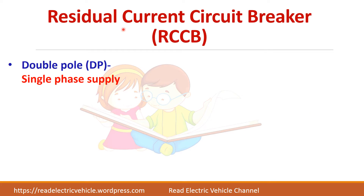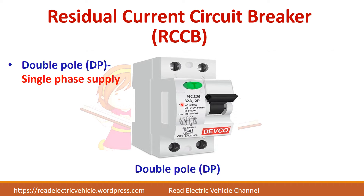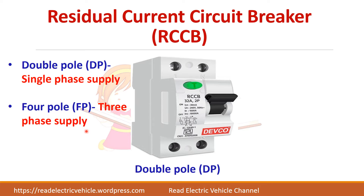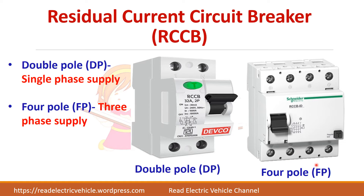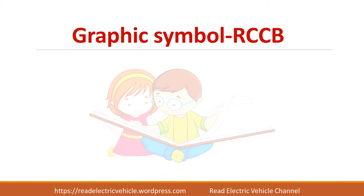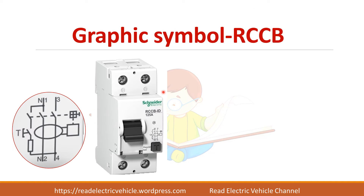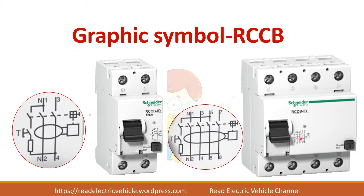The RCCB is available both as a double pole one for single phase supply and as a four pole one, which can be used for three phase supply. If you see the graphical symbol for a double pole, the symbol shows that it is sensing the current in both the lines, and here this is for a four pole RCCB.